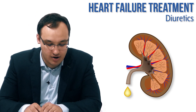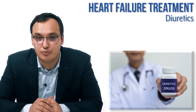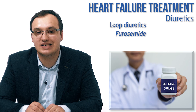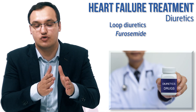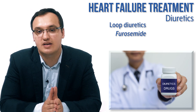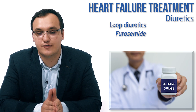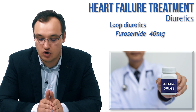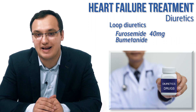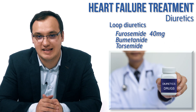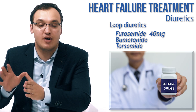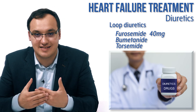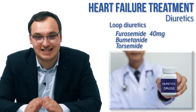Diuretics are very important to use. Loop diuretics are one of the most important types here. Loop diuretics like furosemide - there exist many types of loop diuretics, but furosemide is the one used most in hospitals: furosemide 40mg is the standard. You also have bumetanide or torsemide. These are also good - they are actually better. They have better bioavailability, meaning they are absorbed better than furosemide, but furosemide remains the standard.